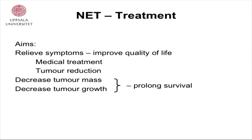The aims of treating patients with neuroendocrine tumors are: first, to relieve symptoms and improve quality of life — this is especially important since patients live for a long time and should have a good quality of life, achieved through medical treatment and by reducing tumors. We also want to decrease the tumor mass and tumor growth in order to prolong survival.